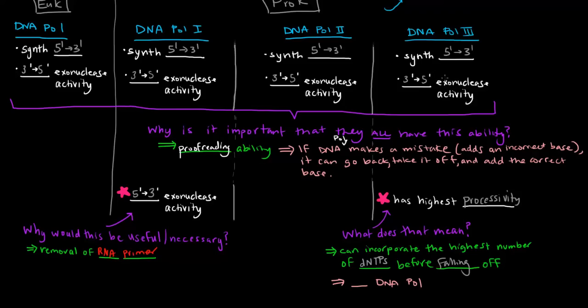So clearly this one is really, really good at going through and just adding DNTPs before it falls off. So it's actually the primary DNA polymerase involved in actually extending a DNA chain.